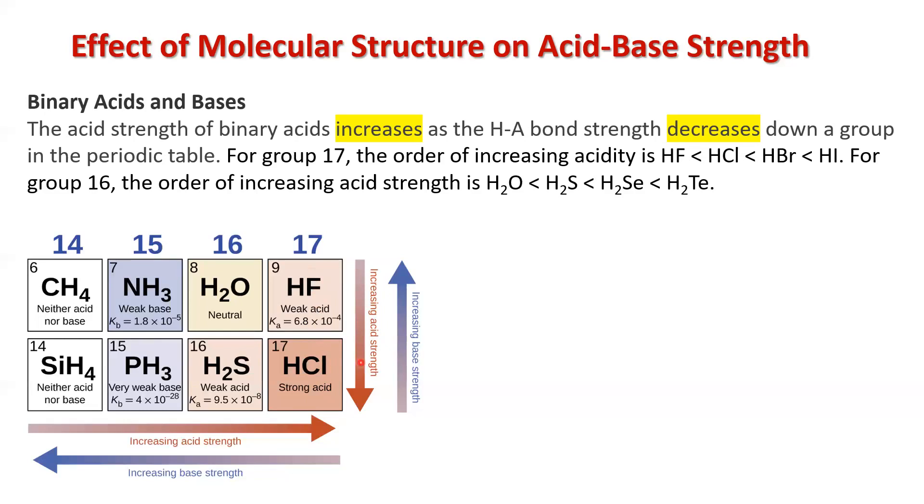Now think about this for a second. Hydrochloric, hydrobromic, and hydroiodic acid are all strong acids. Hydrofluoric acid is a weak acid. So it makes sense that the weak acid is at the top, and the acids get stronger as we go down.